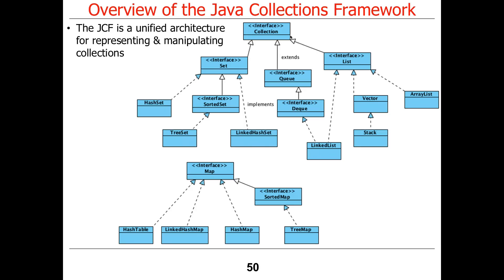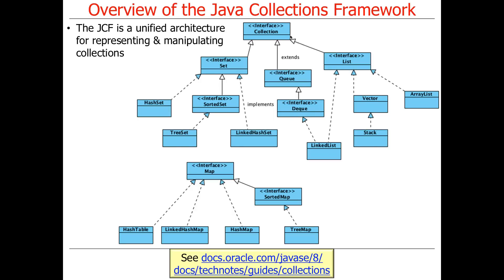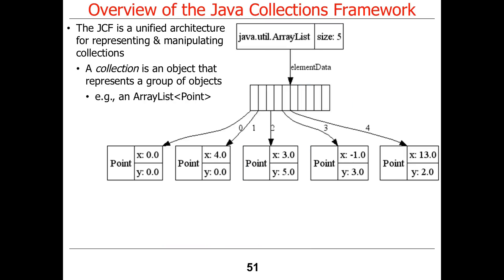The Java collection framework is essentially a unified architecture for representing and manipulating collections. What's a collection? A collection is basically an object that represents a group of objects — or sub-objects is probably a better term — because it collects or contains those objects internal to itself.